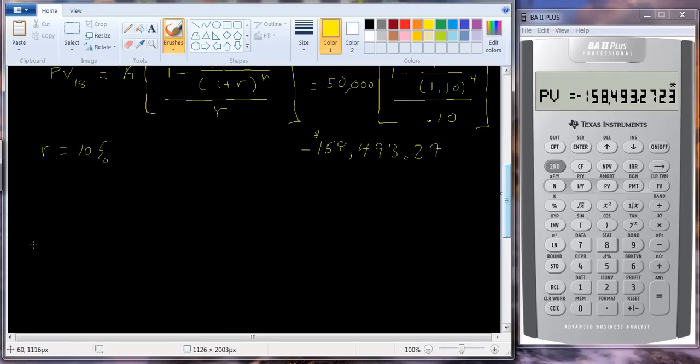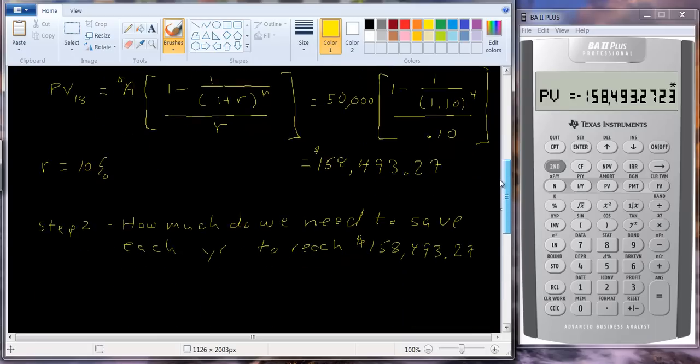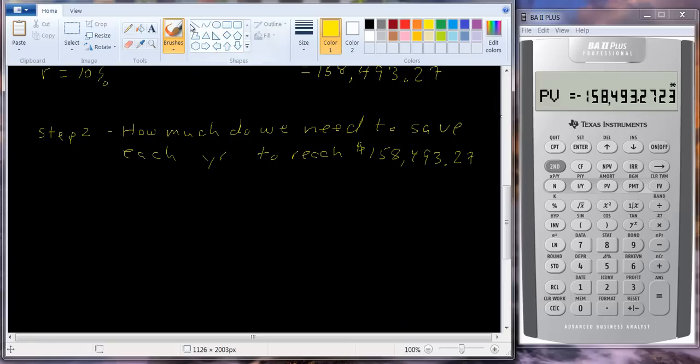Step two. Step two is, how much do we need to save each year to reach 158,493.27? How much do we need to save each year? So we're going to save the same amount to reach 158,493.27. Well, if we went back to our diagram, I'll draw another diagram.